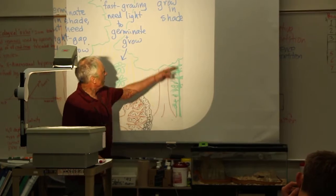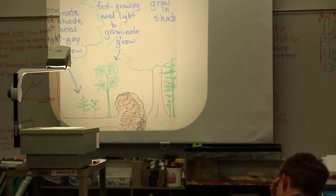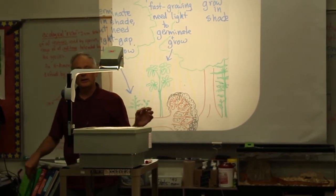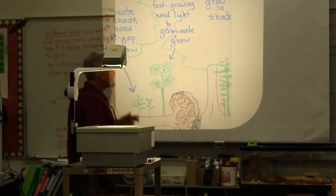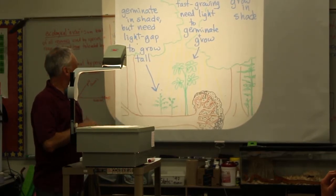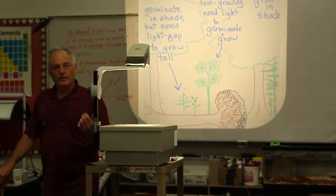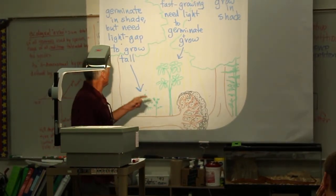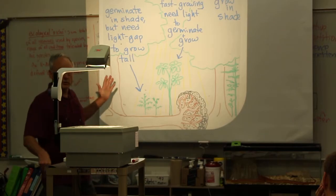On the other extreme, there are trees whose seeds germinate even in the deep shade of the mature forest. Their saplings grow slowly in dim light conditions and may eventually get up into the canopy. In between, there are species whose seeds germinate and grow a little in the shade, but then just stand there without growing bigger until a tree-fall gap exposes them to light — then they rapidly grow higher. That's just three points along a whole spectrum of regeneration techniques.